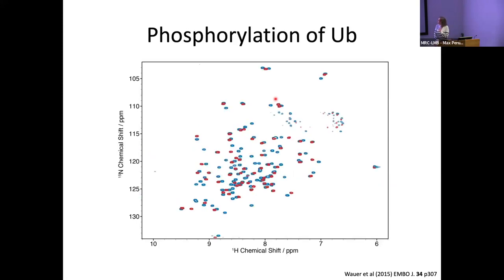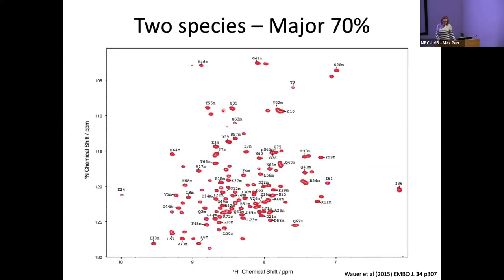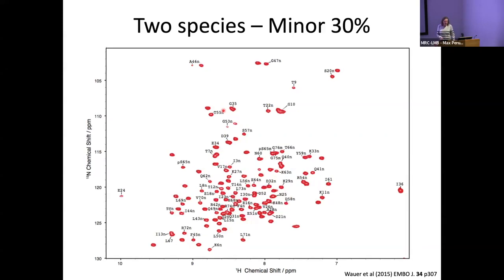Here's our wild type ubiquitin and our phosphorylated spectrum. You can see that there's a subset of peaks in the phosphorylated ubiquitin that match up quite nicely with wild type, but then we have these additional peaks that are in quite a different chemical environment. We used NMR to work out what was going on. Because the protein was double labeled, we were able to do an assignment and assign the major species, which was about 70% of the population by peak intensity, which matches very well with wild type ubiquitin.